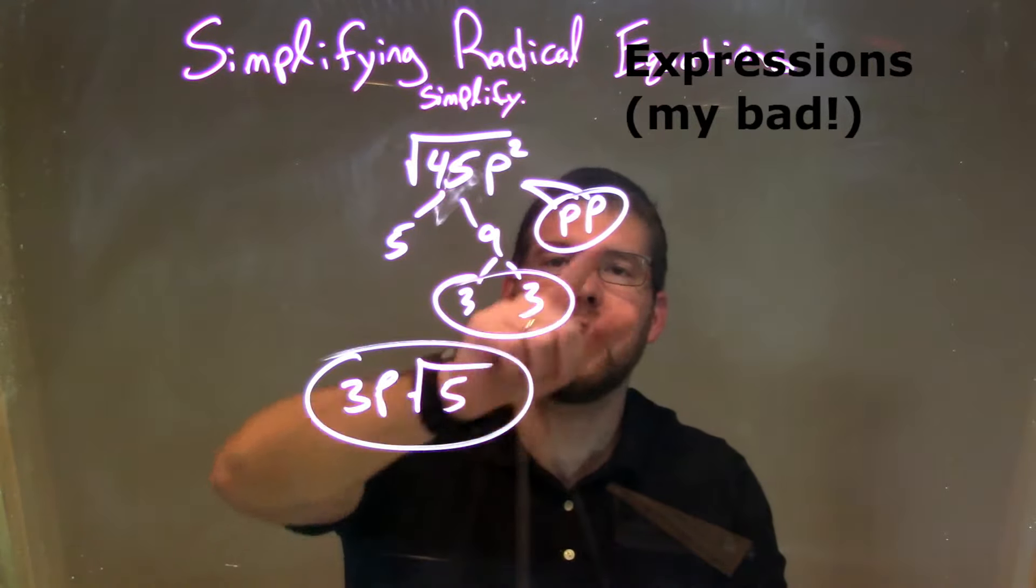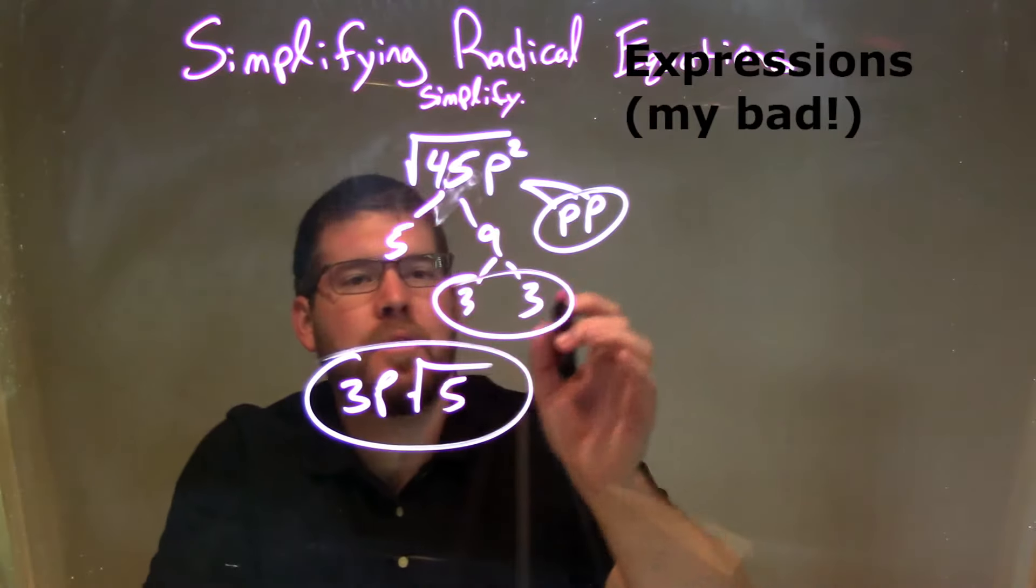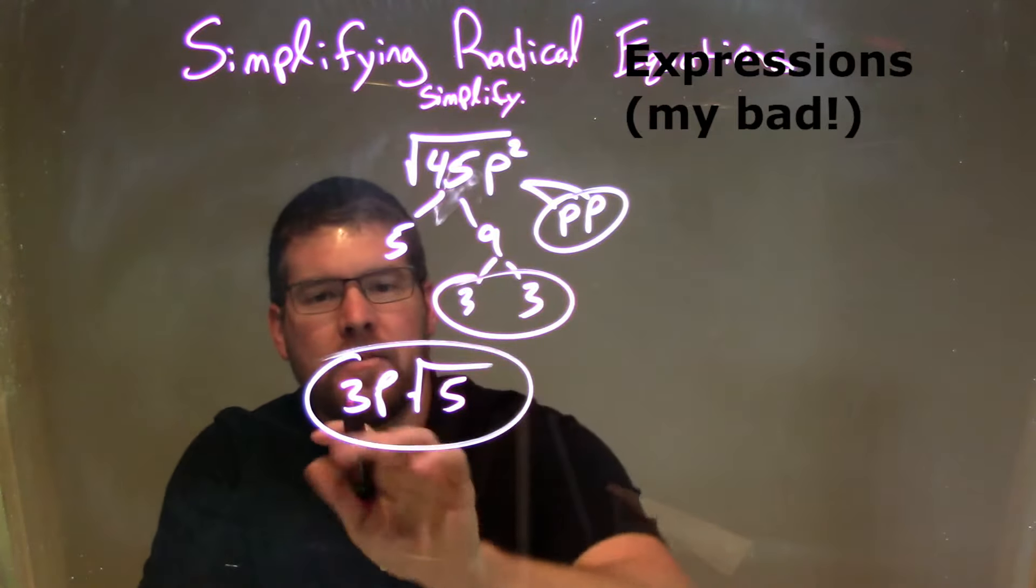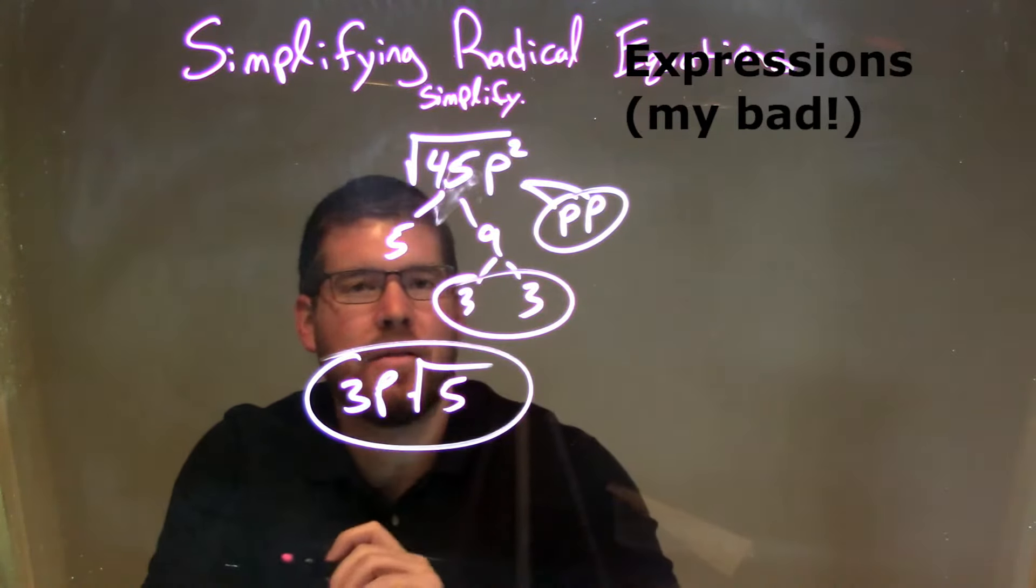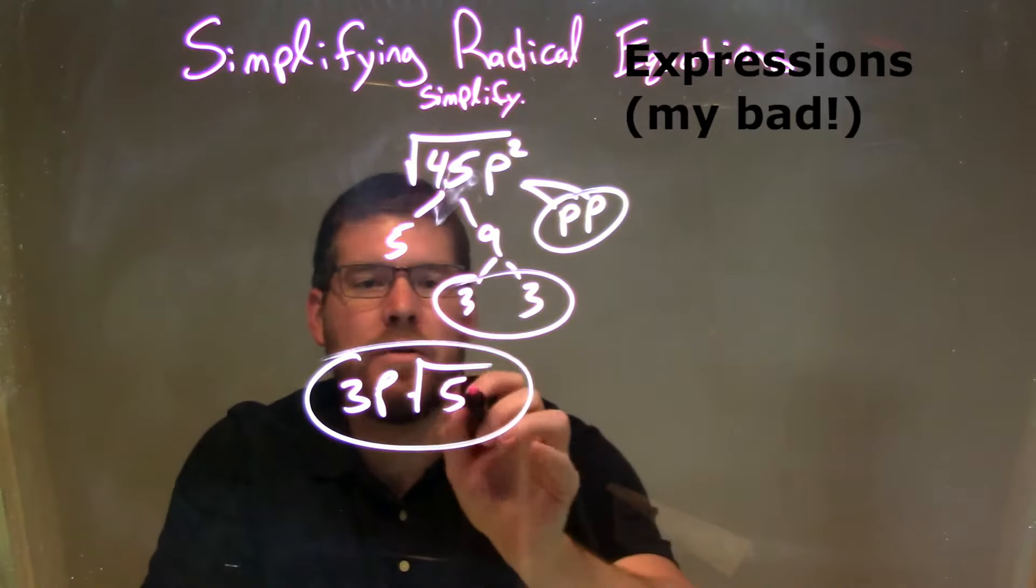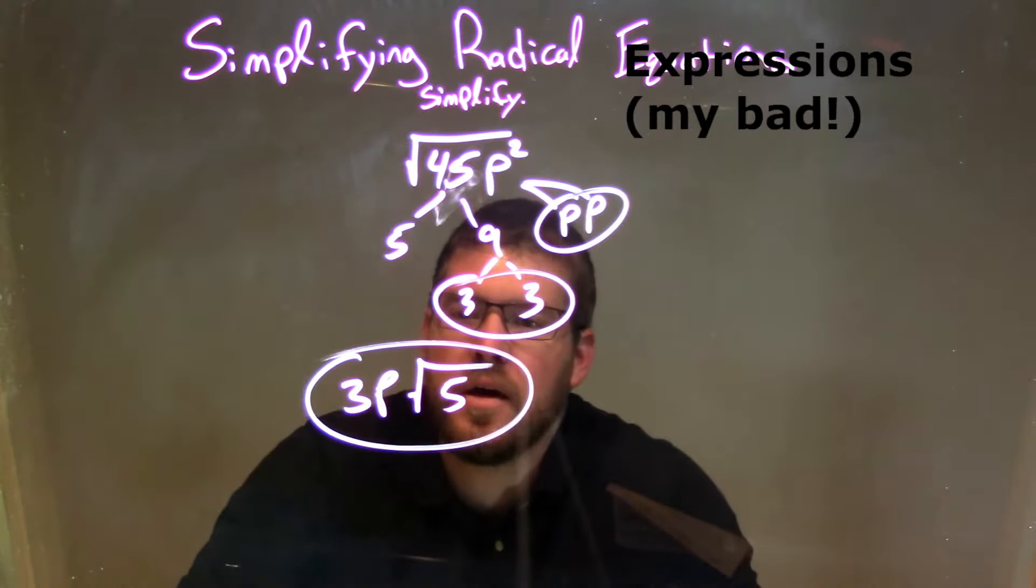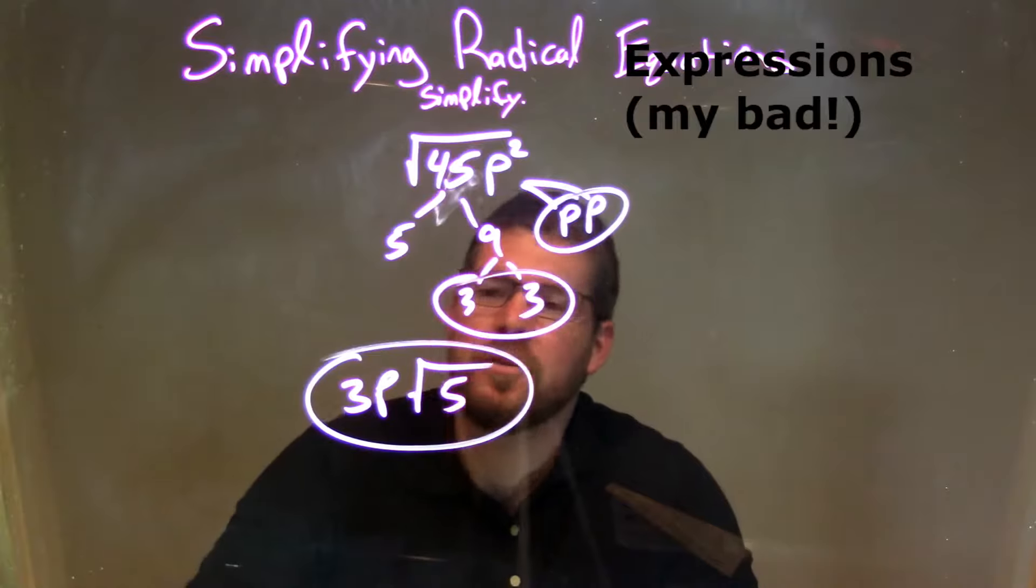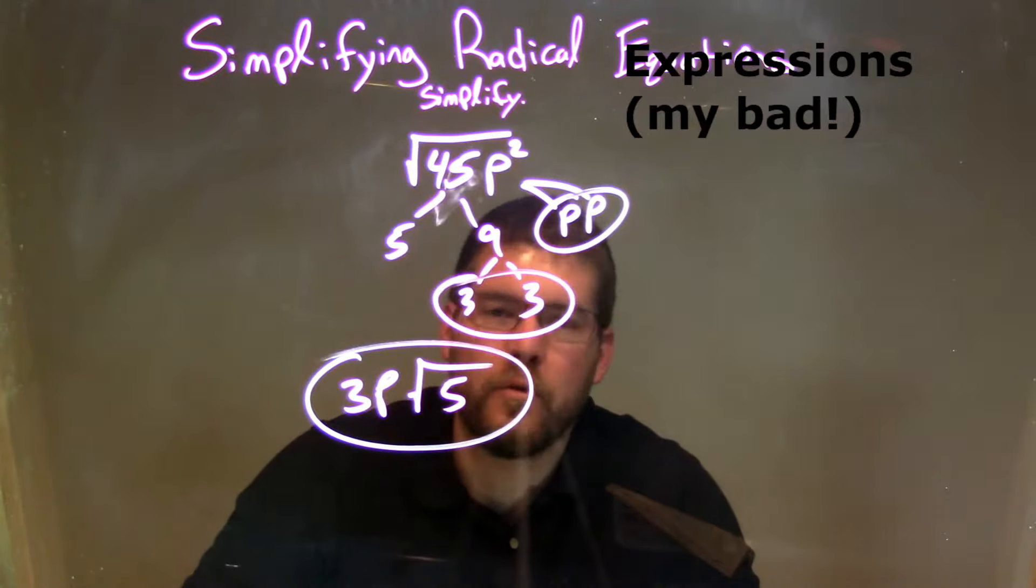I circle my pairs. I have one pair of 3s and one pair of p's. When I circle them, I bring them to the outside. You represent them by one 3 here and one p there. The singles that are left over stay on the inside of the square root. So our final answer is 3p times the square root of 5.